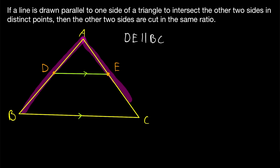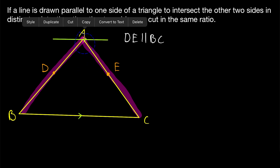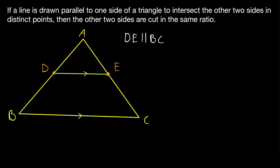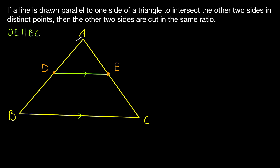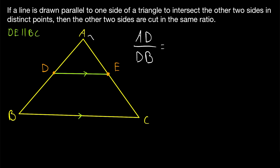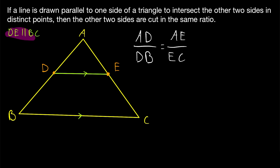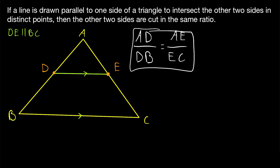If we have this situation such that the segment DE intersects the other two sides of the triangle in two distinct points — in other words, DE doesn't cut the triangle at a vertex — then it must be the case that DE cuts these two sides in the same ratio, so that the ratio of AD to DB equals the ratio of AE to EC. We want to prove this equality.